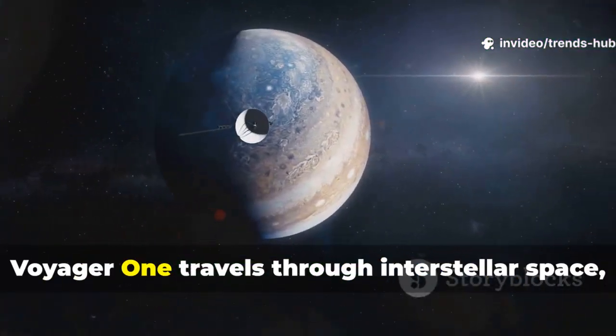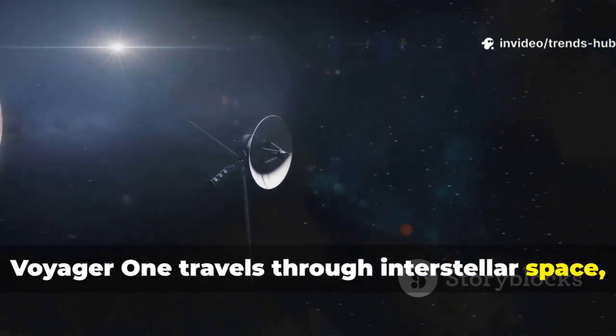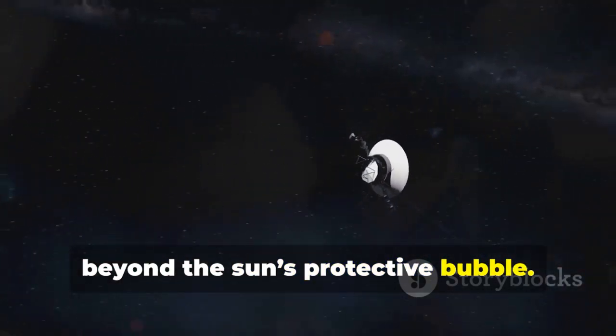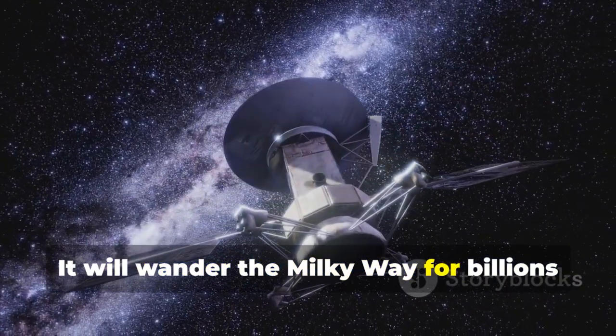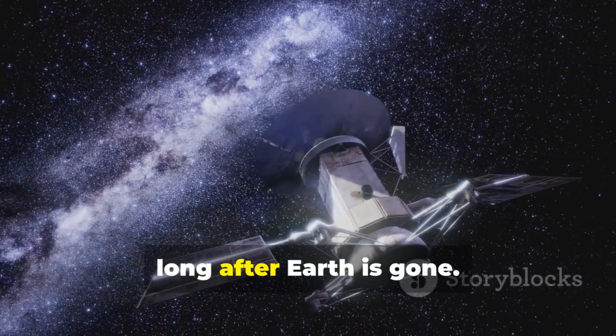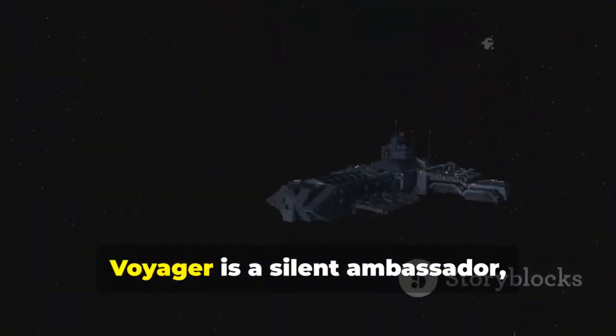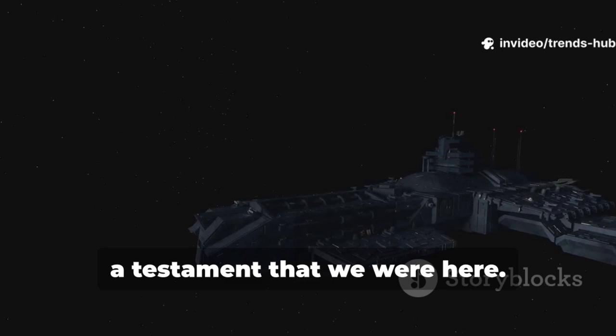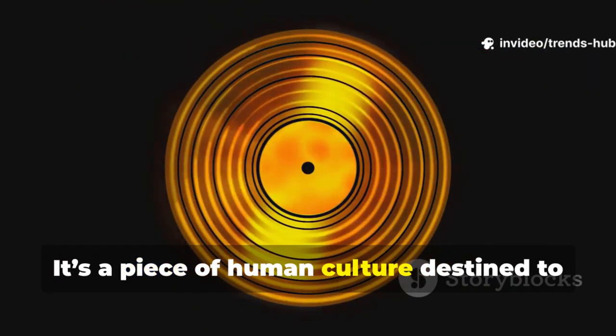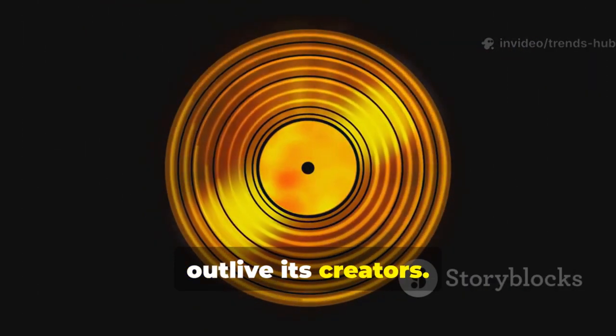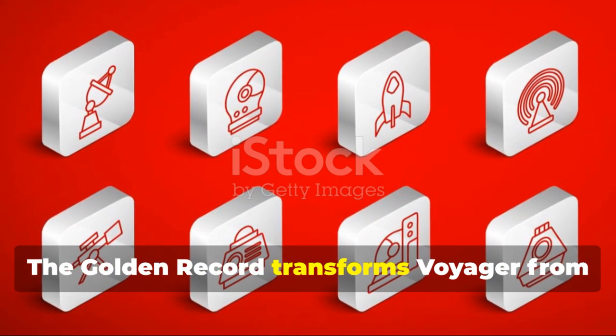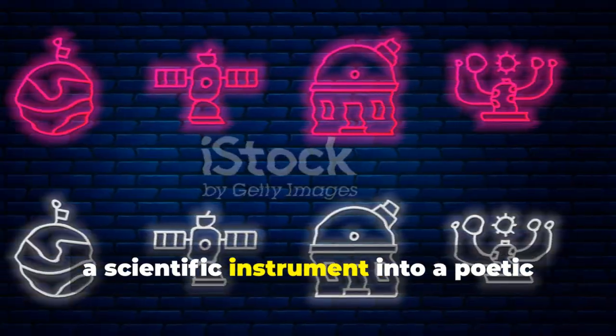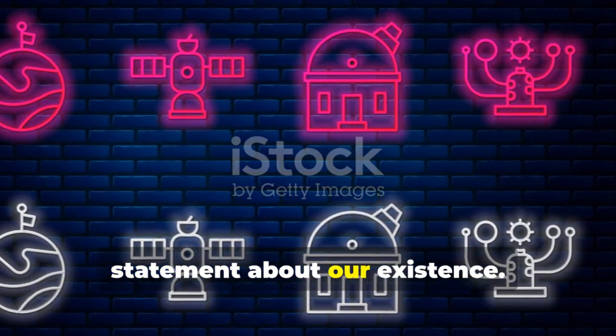Now, Voyager 1 travels through interstellar space, beyond the sun's protective bubble. It will wander the Milky Way for billions of years, long after Earth is gone. Voyager is a silent ambassador, a testament that we were here. It's a piece of human culture destined to outlive its creators.